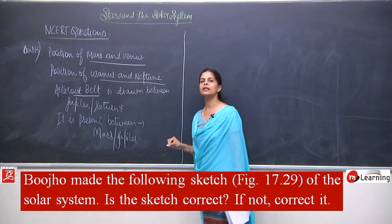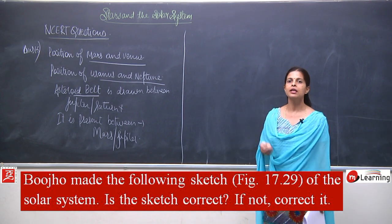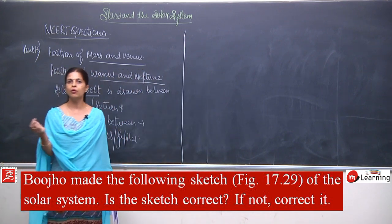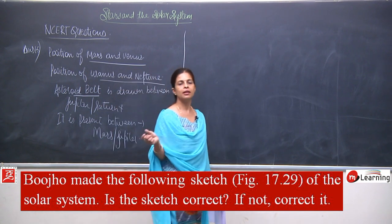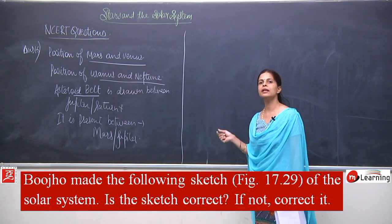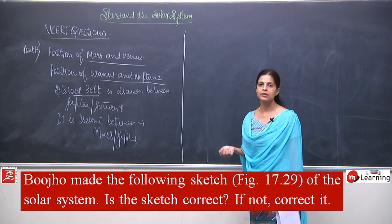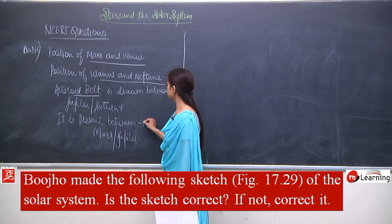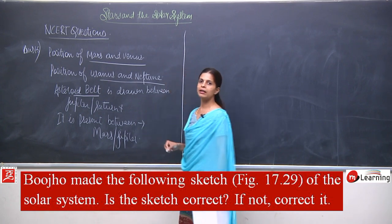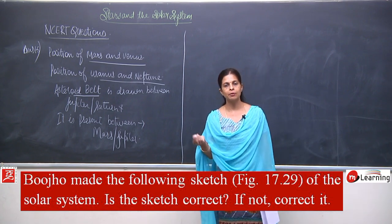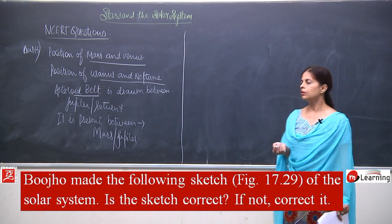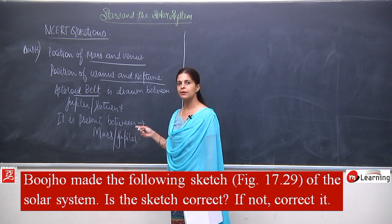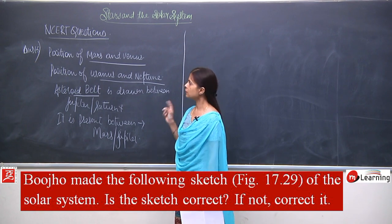So three things are wrong in this sketch: first, the position of Mars and Venus is incorrect; second, the position of Uranus and Neptune is also incorrect; and third, the asteroid belt. The asteroid belt is between Mars and Jupiter — it is not between Jupiter and Saturn. The asteroid belt, the white belt, is present between Mars and Jupiter, where metallic rocky objects move in fixed orbits. There are more than 70 asteroids moving around there, often called minor planets. These asteroids are moving between Mars and Jupiter.